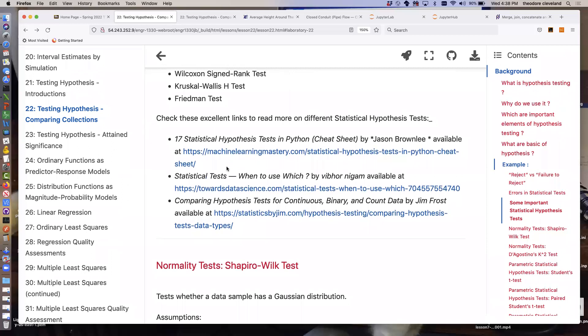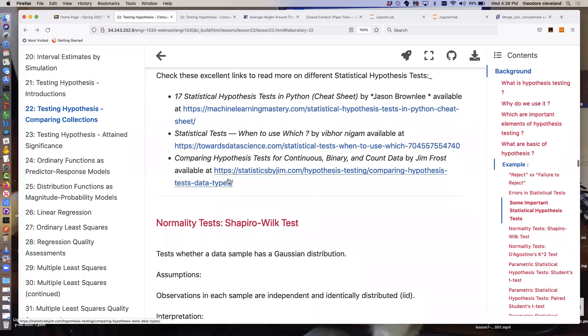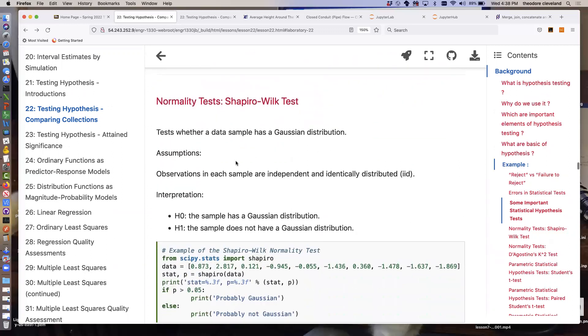If you want to learn more about some of the statistical tests, here's a short reference sheet for 17 tests. Another one on which to use when, another one for comparing hypothesis tests for some different cases. So let's just go through the list. I'm going to just scroll through the list and scroll through the examples because you're all collectively yawning pretty good now.